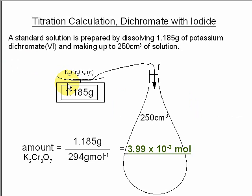The first part says a standard solution is prepared by dissolving 1.185 grams of potassium dichromate and making up to 250 cm cubed of solution. So here is weighed out that mass of dichromate put into a volumetric flask, 250 cm cubed. We can work out the number of moles, the amount of dichromate, by taking the mass and dividing by the relative molecular mass, and there is the amount of dichromate in the 250 cm cubed volumetric flask.